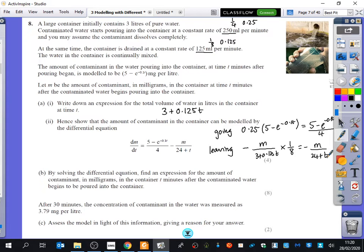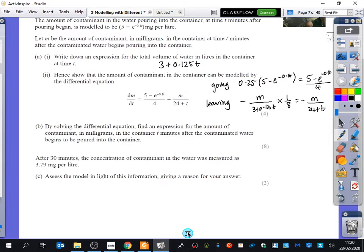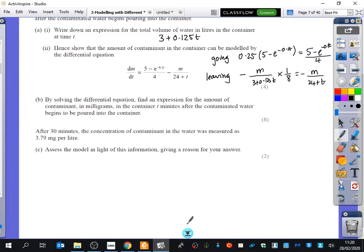So what's this m? M is the amount of contaminant in the container. Let m be the amount of contaminant in milligrams in the container at time t. Should we solve the equation or should we just go straight to part c? Do you want to solve it? Yeah. Okay, fine, let's solve it. So we're now going to do the maths part rather than the setting up the equation part. So it's a first order differential. Solve the equation.